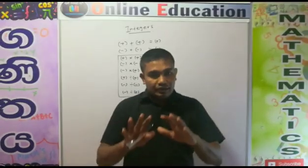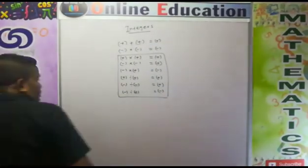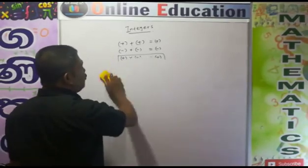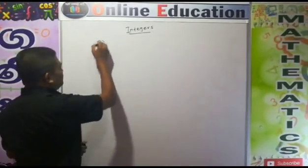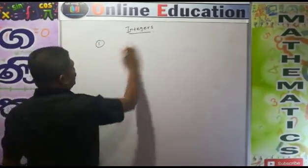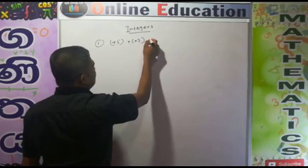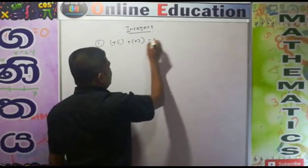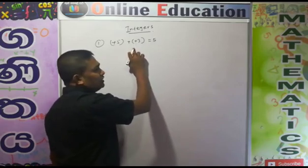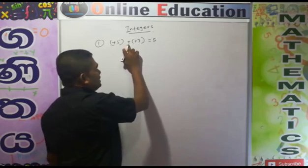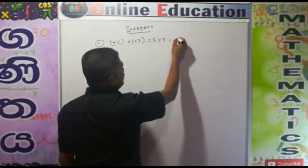We will discuss this with a few examples of how we can use this knowledge to solve problems. First example: plus 5 plus plus 3. You can write it as plus 5 plus, into plus — this bracket meaning is multiplication — into plus 3. So 5 plus 3 equals 8.